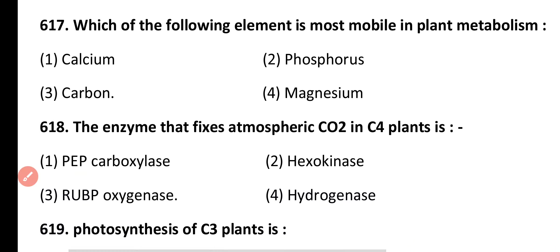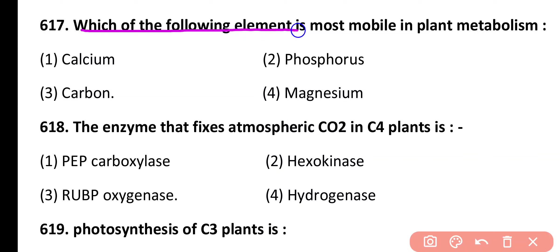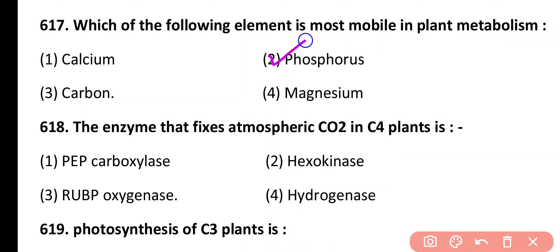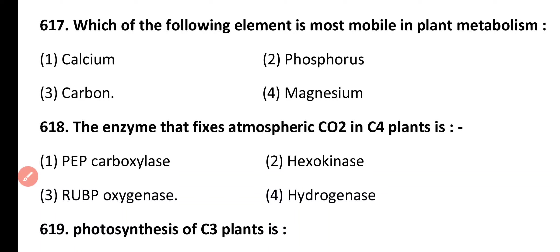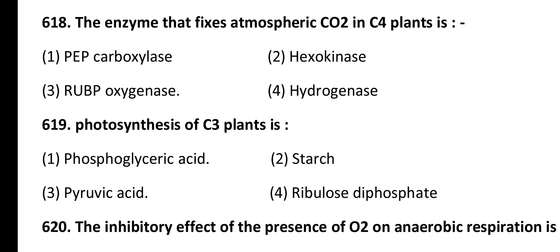Question 617. Which of the following elements is most mobile in plant metabolism? Calcium, phosphorus, carbon, magnesium. Correct answer is option 2. Phosphorus is the most mobile element in plant metabolism.